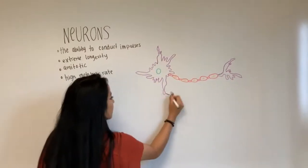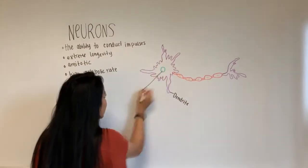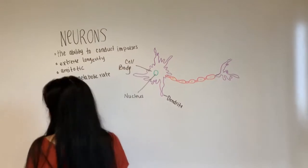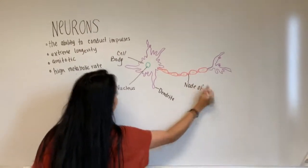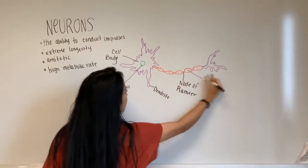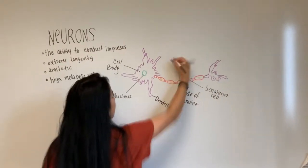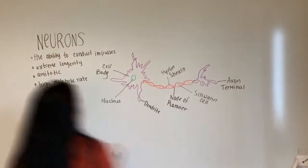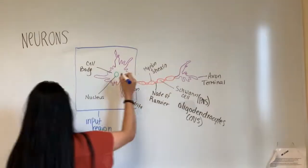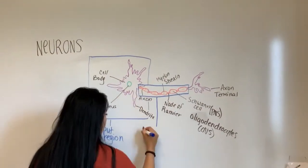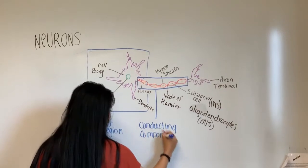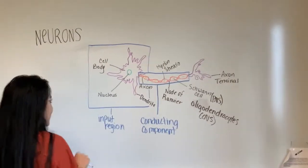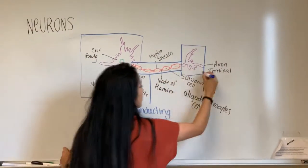The three functional components of neurons is input region which consists of the dendrites and the cell body where the information comes in messages, the conducting region which is away from the cell body and along the plasma membrane which carries electrochemical messages, and secretory region where nerve impulses are generated at the initial segment of the axon and along the axon to the axon terminal.